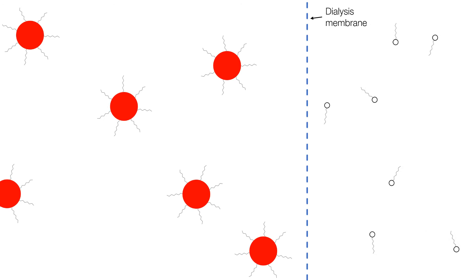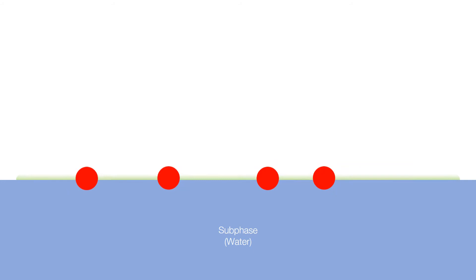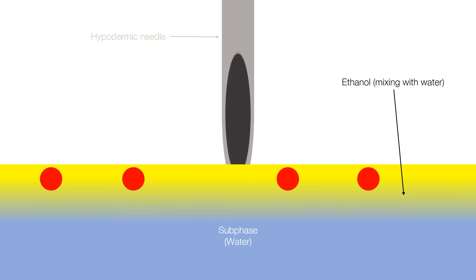Wait, did you just hear me say spreading solvent? This is conventionally an organic solvent such as chloroform which helps to spread our particles on the water's surface before evaporating, leaving behind just the nanoparticles or molecules of interest at the water's surface. However, for polymeric nanoparticles which may not be compatible with such solvents, we sometimes use an ethanolic aqueous solution.